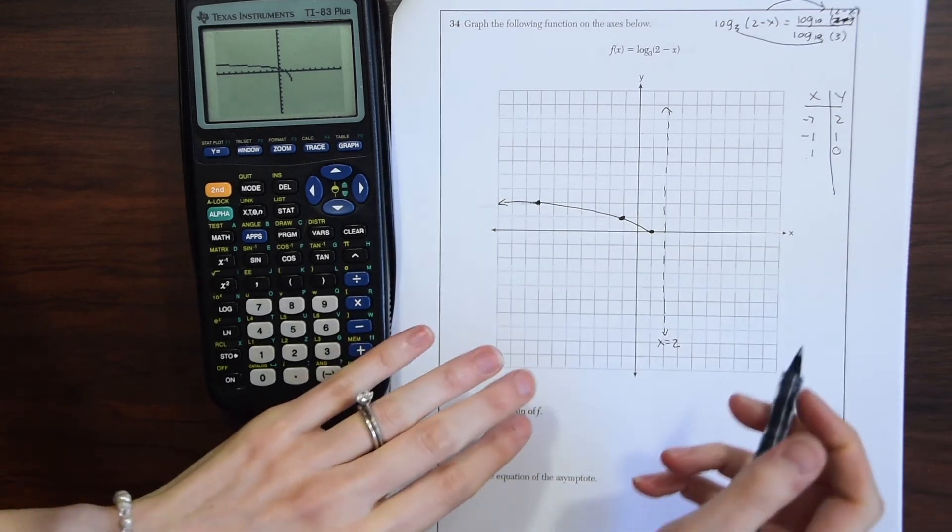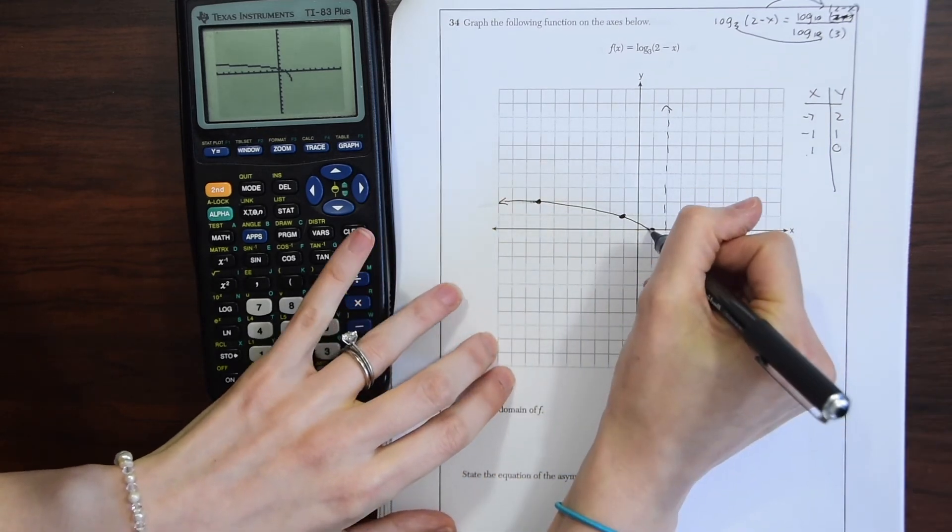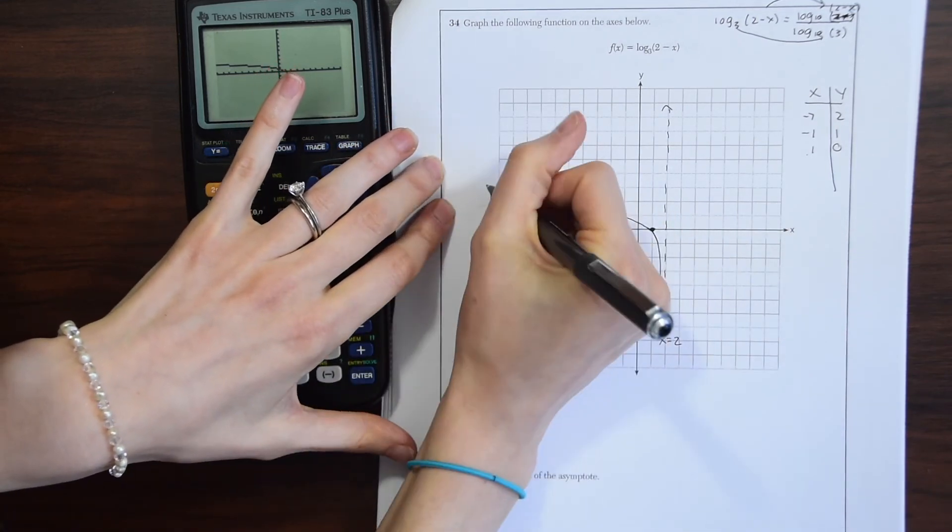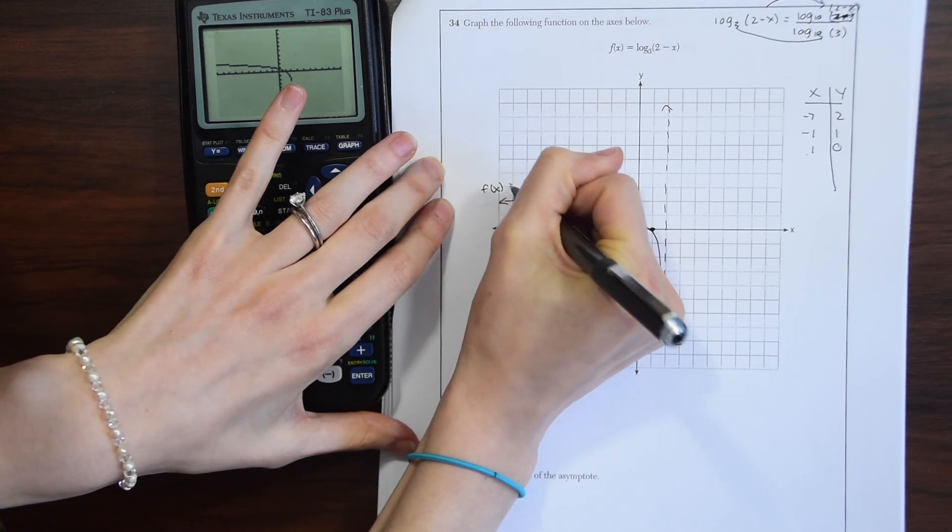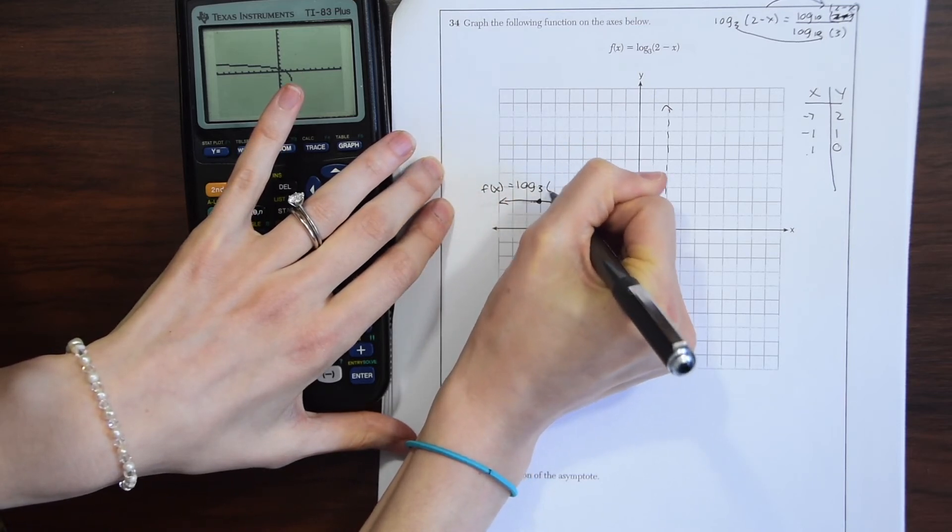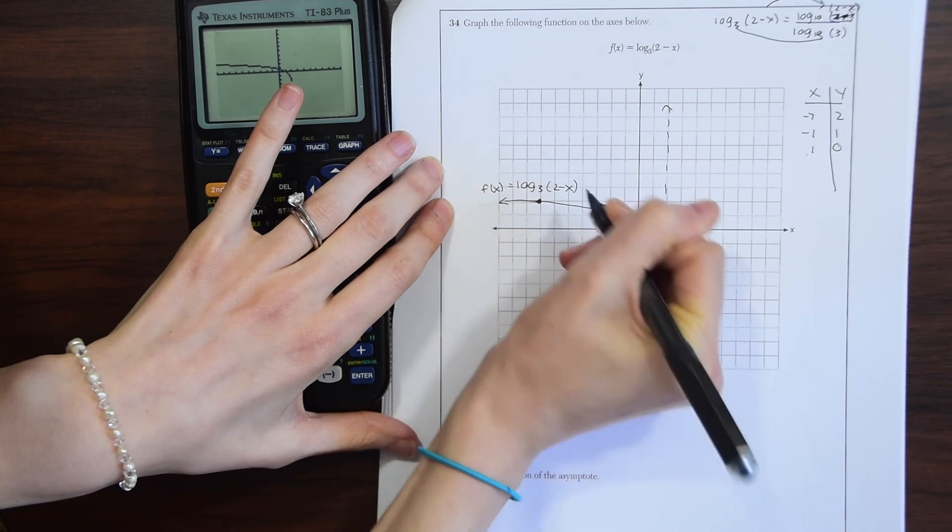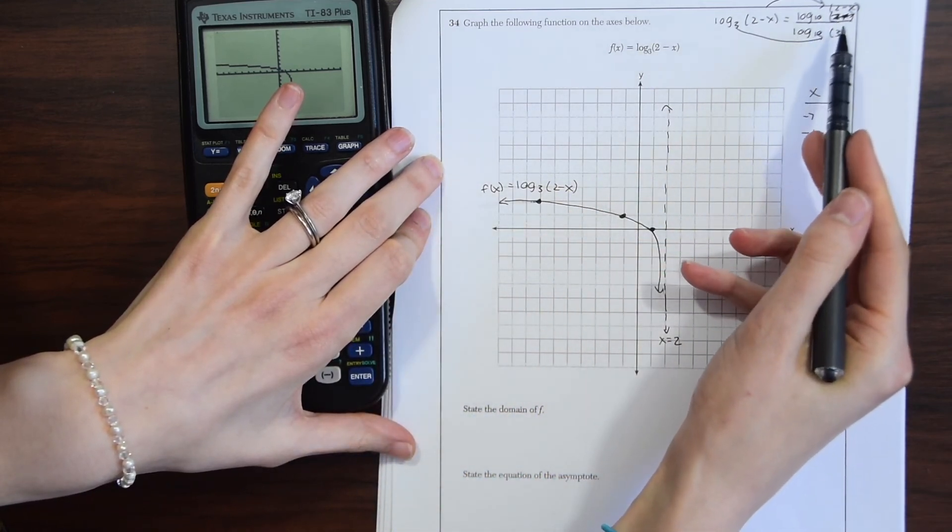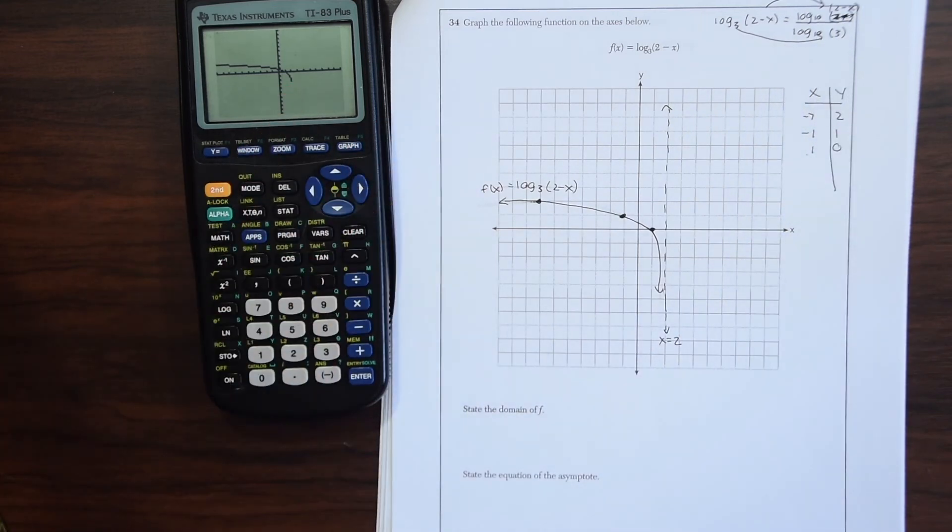Since we have an asymptote here, we know that this is going to go very close to this line but never actually touch it. So now this is our graph. We're going to label it f(x) = log base 3 of (2 - x), or if you converted it, log base 10 of (2 - x) over log base 10 of 3.